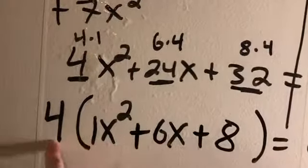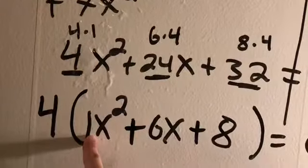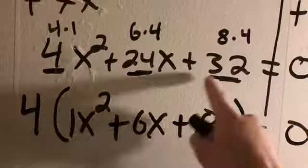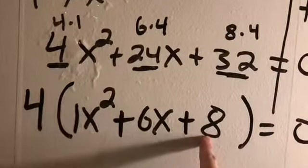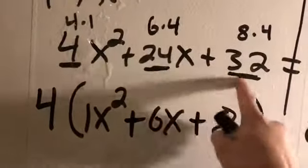And when you guys factor out a number, you're just dividing. 4 ÷ 4 is 1. 24 ÷ 4 is 6. 32 ÷ 4 is 8. You're looking for the biggest number where you can divide all of those numbers nicely.